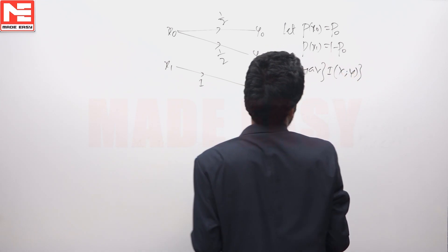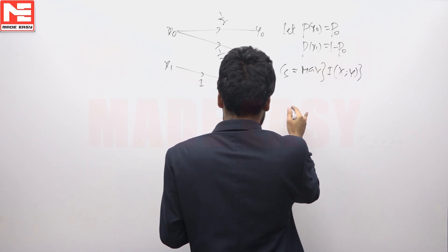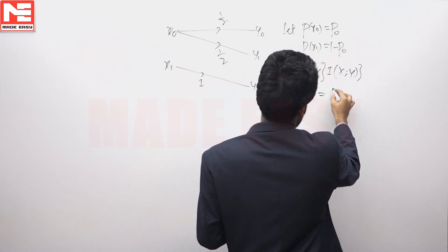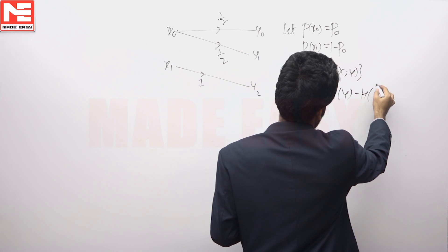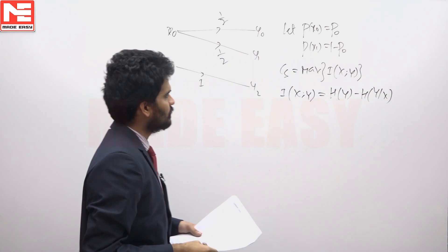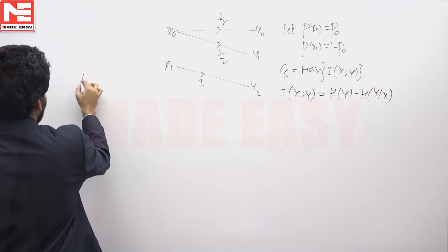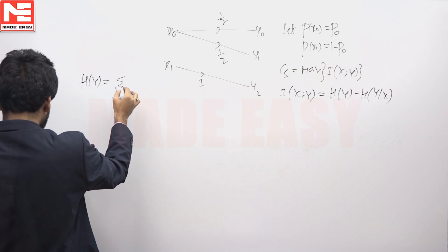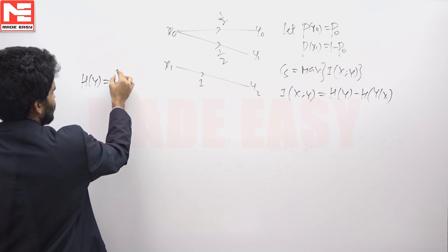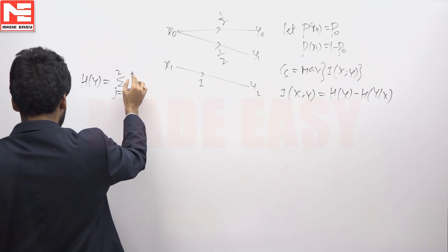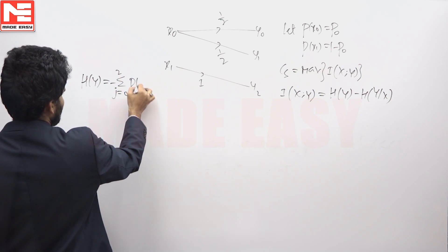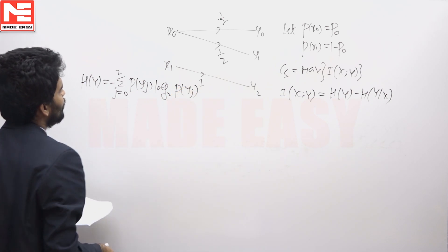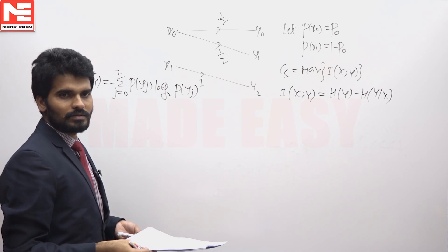I(X;Y) equals H(Y) minus H(Y|X). First, I will find H(Y). H(Y) equals the summation for J from 0 to 2 of minus P(YJ) log base 2 of P(YJ), which expands to minus P(Y0) log P(Y0) plus P(Y1) log P(Y1) plus P(Y2) log P(Y2).